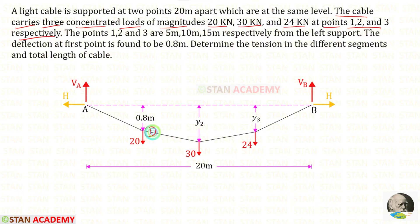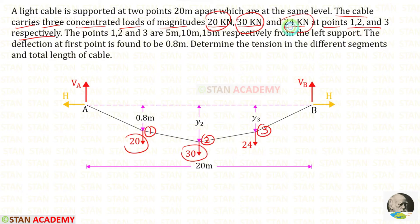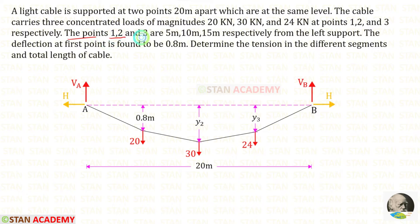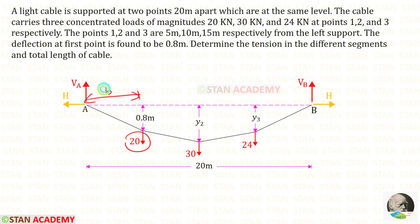Let us keep these as point 1, point 2 and point 3. So in the first point we have a 20 kN load, in the second point we have 30 kN, and in the third point we have 24 kN. The points 1, 2 and 3 are 5 meters, 10 meters and 15 meters respectively from the left support. From the left support, this load is at a distance of 5 meters, and this load is at a distance of 10 meters.